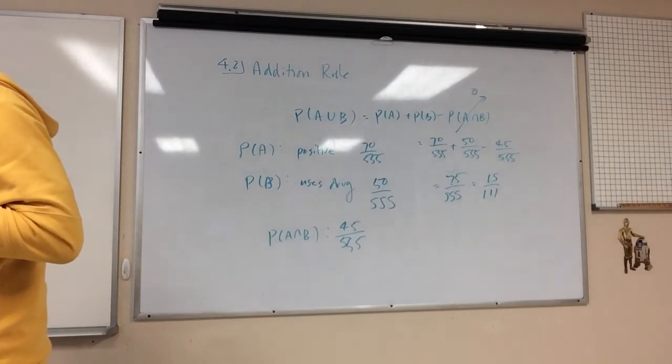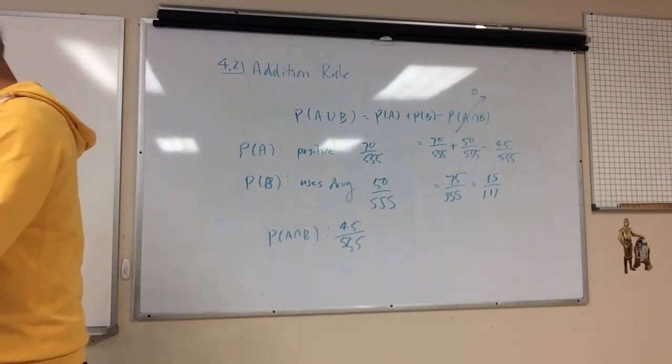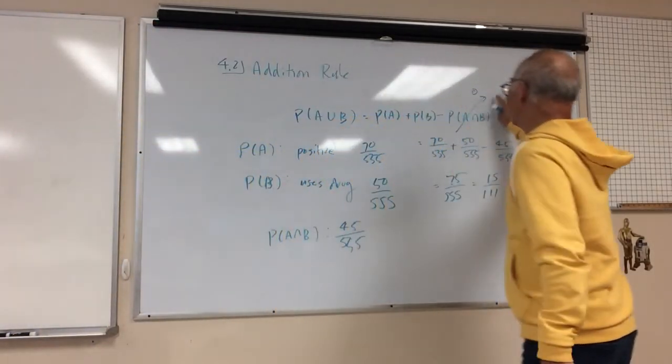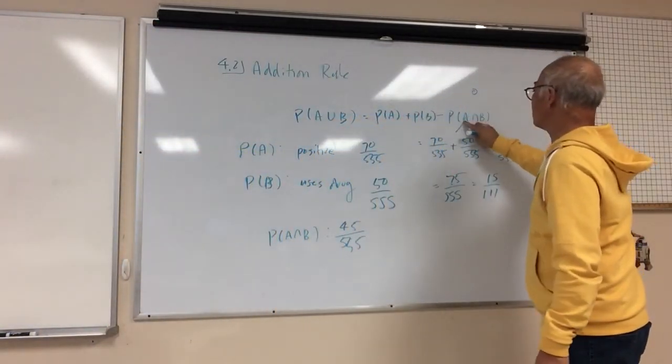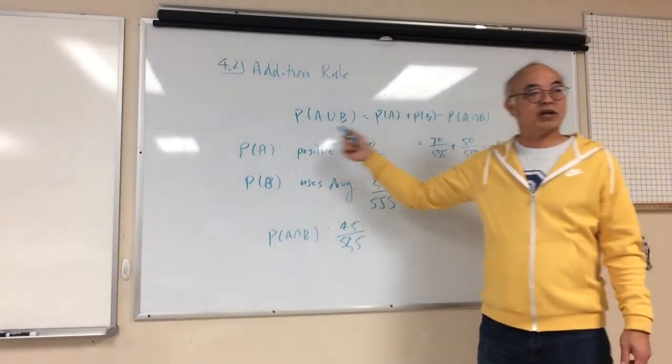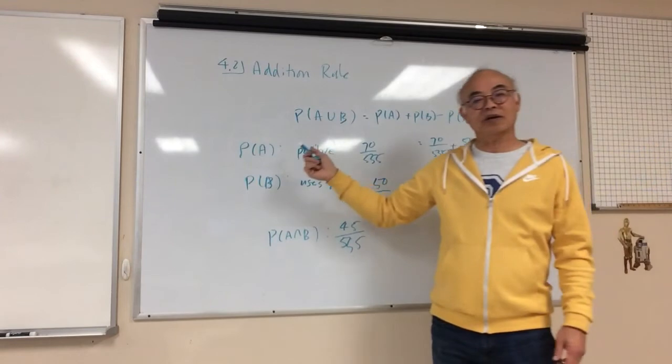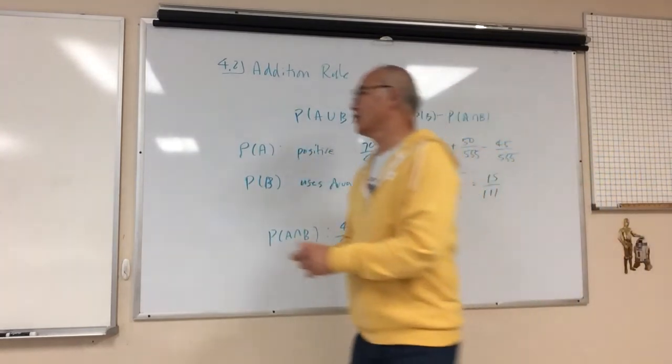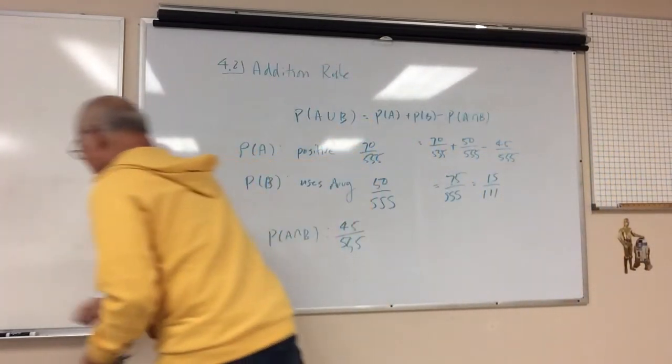So we're going to stop right there today. What is the thing that we learned today that's the most important? It's going to be this guy right here, this equation. With the associated Venn diagram. I forgot to ask you this question.